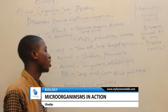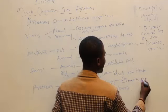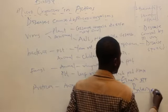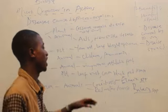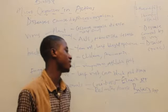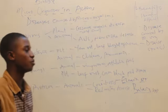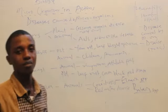Protozoa have significant effects on animals. They cause coccidiosis, caused by Eimeria species. Red water disease is caused by Babesia species. Also, trypanosomiasis — the causal organism is Trypanosoma, carried by the tsetse fly. Additionally, Plasmodium is responsible for causing malaria.